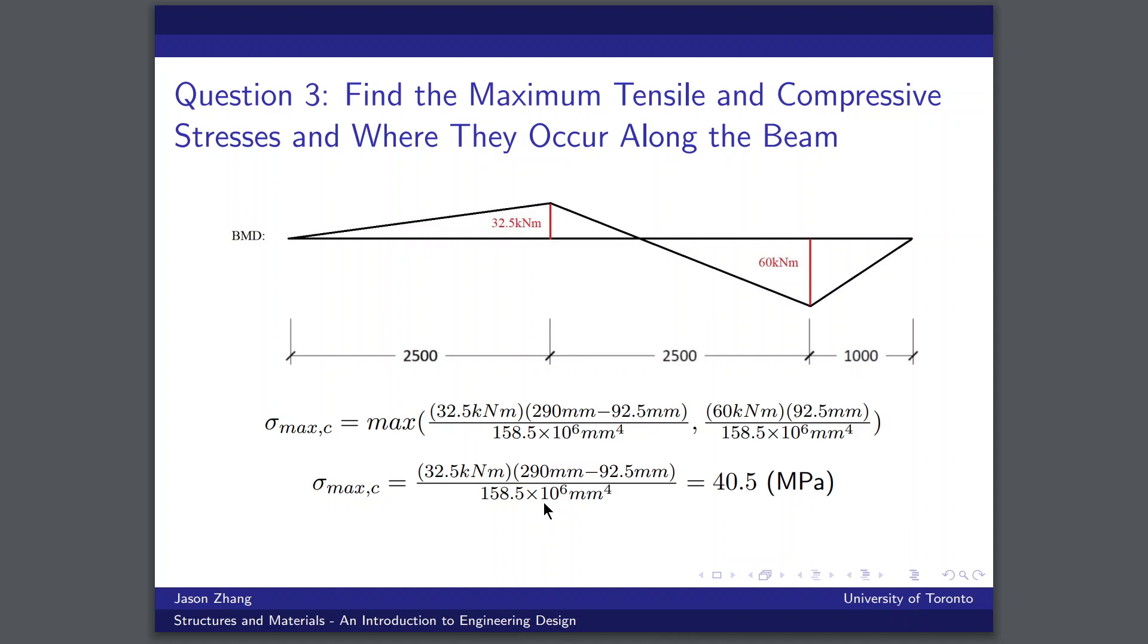We can do the same sort of analysis for the compressive stress, but just flipping the side of the beam we're looking at. So when we have a positive bending moment, the maximum compressive stress will happen at the top face, as indicated by this 290 minus 92.5 millimeters. And when we have a negative bending moment, the maximum compressive stress will happen at the bottom face. And so it's not as clear which of these terms is greater, but carrying out the calculations will show us that this first term is actually bigger, which means that the maximum compressive stress will happen 2.5 meters from the left edge. It'll have a value of approximately 40.5 megapascals, and it'll be on the top face of the beam.